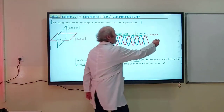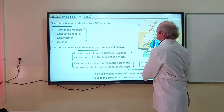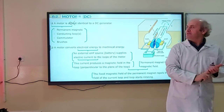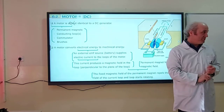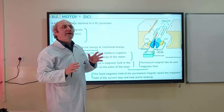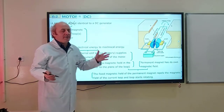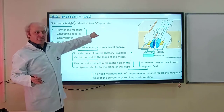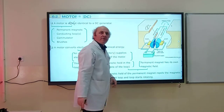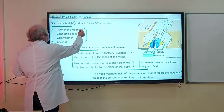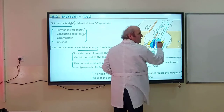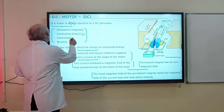A DC generator and an electric motor have exactly the same components. A motor is identical to a DC generator because both of them have the same components. The first component is permanent magnets. The second component is conducting loops. The third component is the commutator.